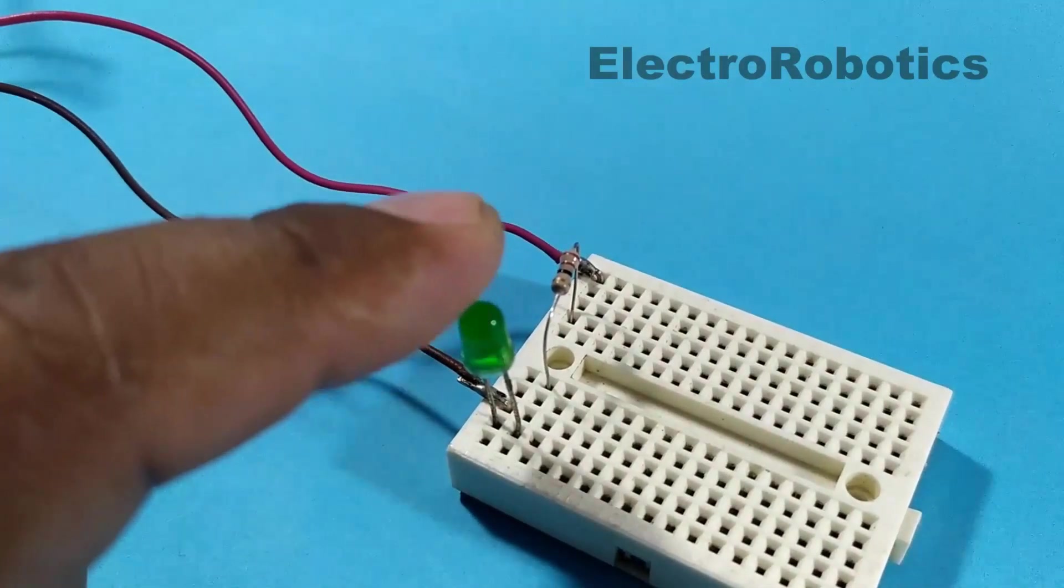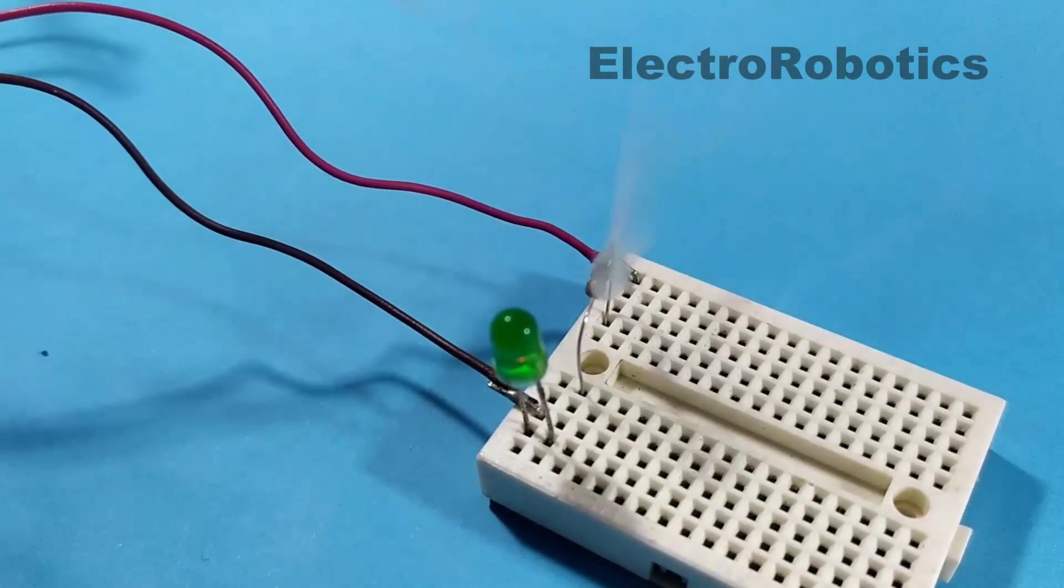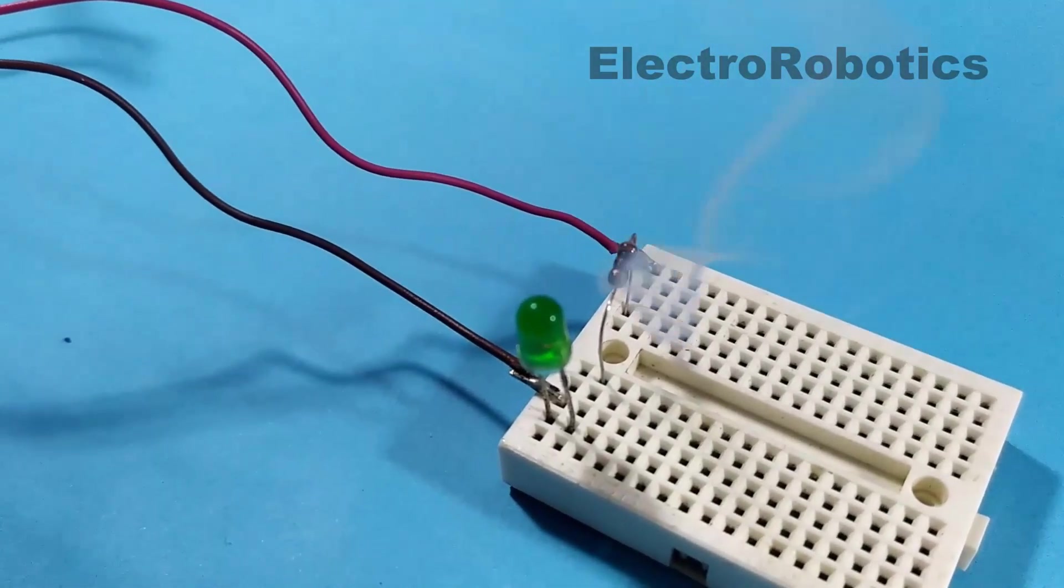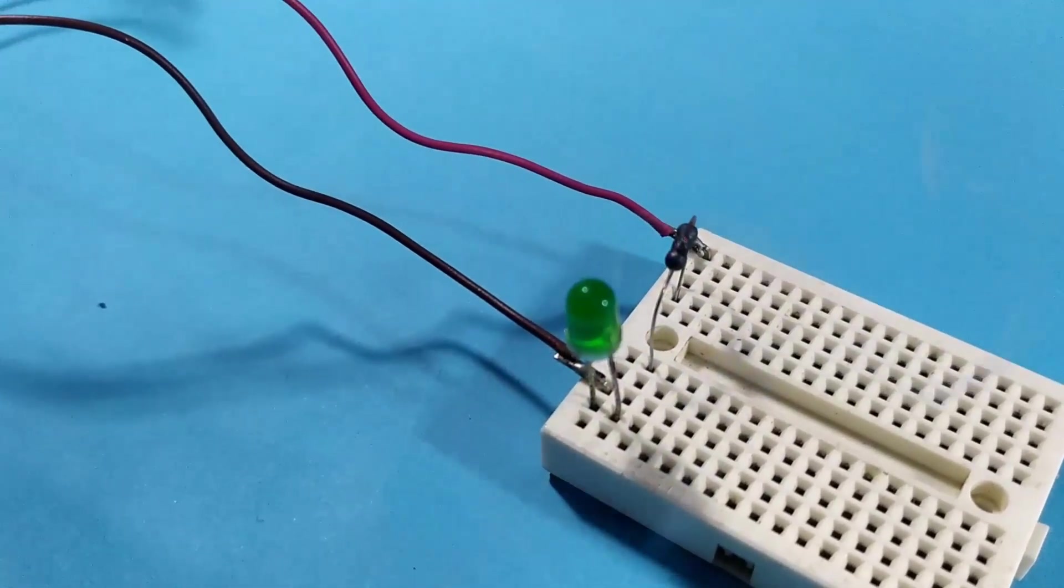What can happen to your LED diode? Well, let's see. The LED burned out, but that doesn't end there. See what happens to the resistance. This could happen to your electronic circuit, and today we are going to see how to avoid these problems. Let's watch the video.